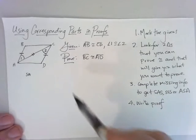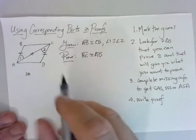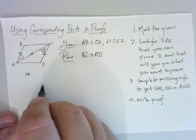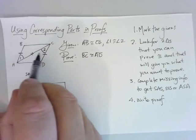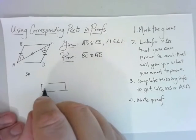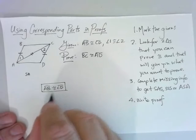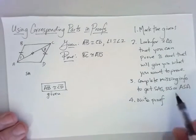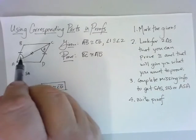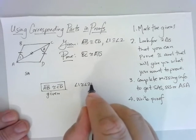Looking at the tick-mark pattern on the top triangle I have side-angle-side, and on the bottom triangle I also have side-angle-side. So these two triangles have the SAS pattern. I'm going to write up my triangle congruence. First: AB is congruent to CD — that was given. Second: angle 1 is congruent to angle 2 — also given.